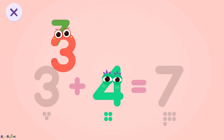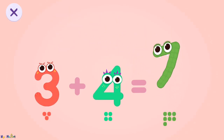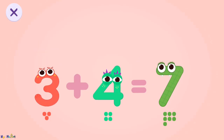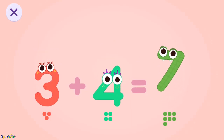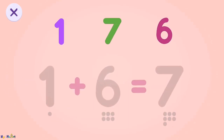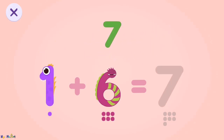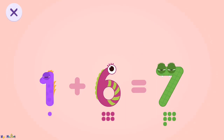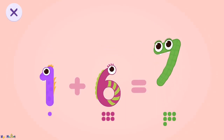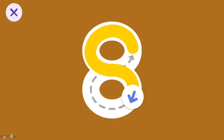Four, three. Seven. Three plus four equals seven. One, six, seven. One plus six equals seven.